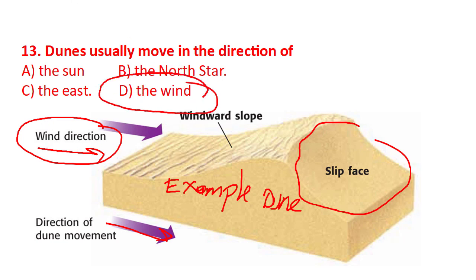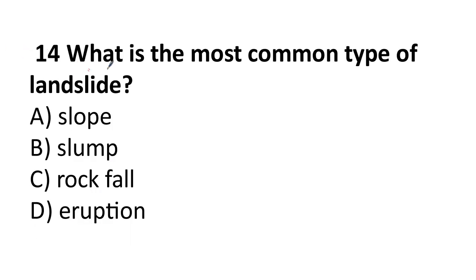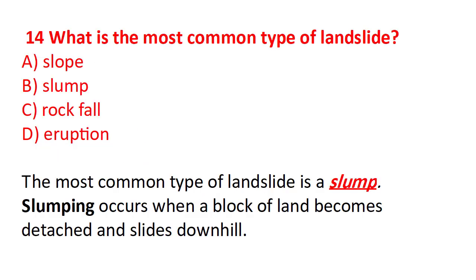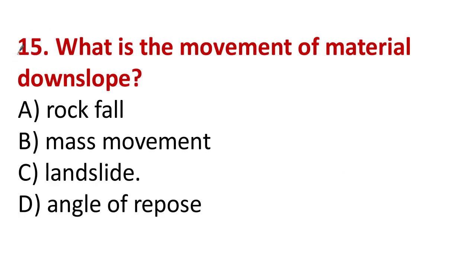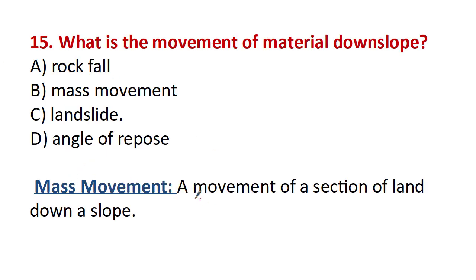Question 14: What is the most common type of landslide? The options are slope, slump, rockfall, and eruption. The most common type of landslide is slump. Slumping occurs when a block of land becomes detached and slides downslope.